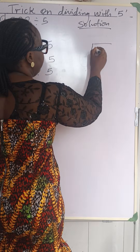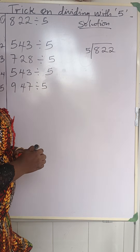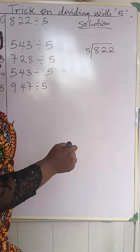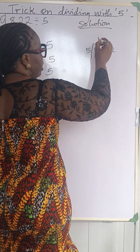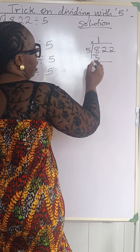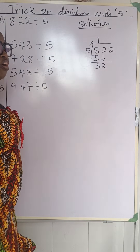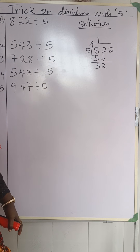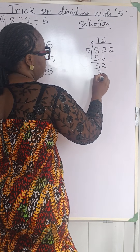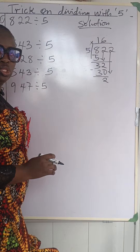I'll write my dividend here and the divisor by the corner. Now we want to divide using the long division method. 5 going into 8 is once, so you write your 1 here. Multiply: 1 times 5 is 5, take away, and you have 8 minus 5 is 3. Bring down your 2 — how many times will 5 go into 32? 5 times 6 is 30, which is closer to 32, so you write 6 here. 6 times 5 is 30, take away, you have 2. Then bring down this other 2 because 5 cannot go into 2.